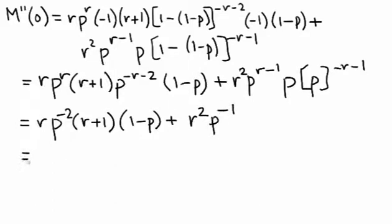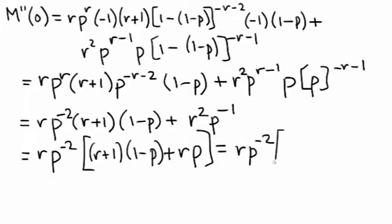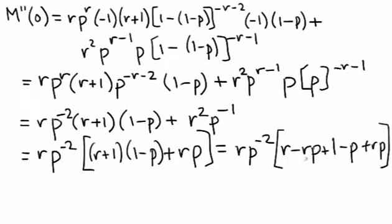Now let's factor out r times p to the minus 2. What do we have left? We have r plus 1 times (1 minus p), plus r times p. That's equal to r times p to the minus 2. Multiplying that out, we end up with r minus rp plus 1 minus p plus rp. The negative rp and the positive rp cancel each other out, and we are left with r times p to the minus 2 times (r plus 1 minus p).